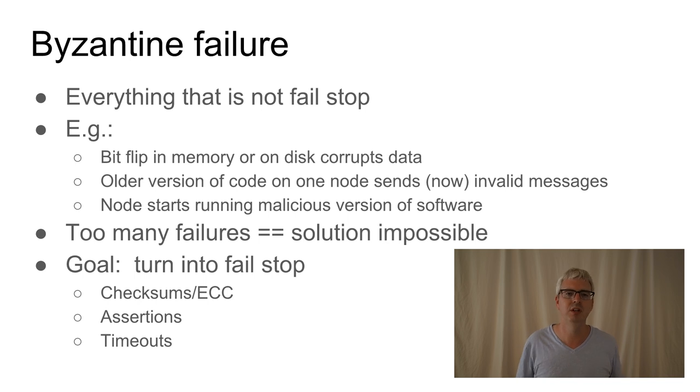The other class is called Byzantine failure. And Byzantine failure is everything that could go wrong that doesn't cause your node to stop. So for example if your program is running along and a particle from space happens to hit memory and flip a bit and it corrupts one of the variables which your program is using, your program might start doing the wrong thing.